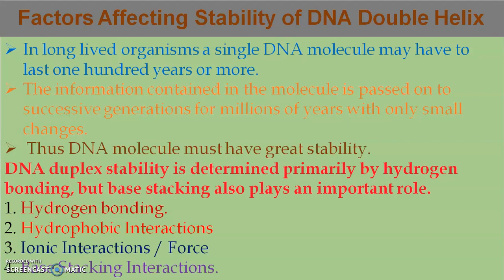Therefore, the DNA molecule must have great stability to be passed on for millions of years across generations. The DNA double helix stability is determined by four different types of interactions or bonds: hydrogen bonding, hydrophobic interactions, ionic interactions, and base stacking interactions.